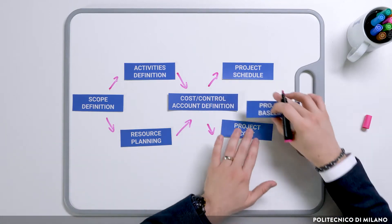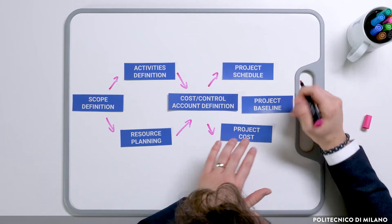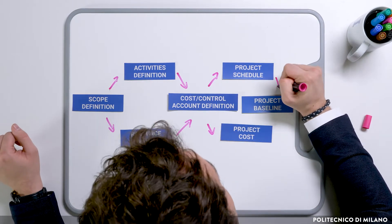With all this information, we can define the project baseline. The project baseline is the tool that brings all this information together, creating a baseline to control the execution of the project. It represents the starting point of the Earned Value Management System, also known as EVMS.